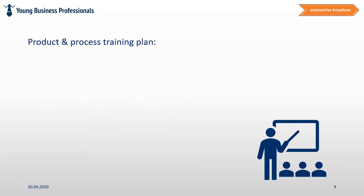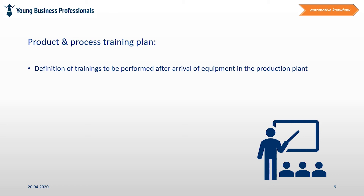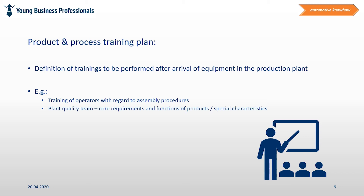Product and process training plan. Over the period of time in which all suppliers are working to produce the production equipment, you get time to define which trainings are required for the team in the production plant that shall be responsible to run the production line in the future. It is important that all employees who will be responsible in future are being trained as detailed as possible. In order to make sure that no essential part of the training is missing, it makes sense to create a training plan covering who needs to be trained, when, and by whom. Important trainings might include training of operators with regard to assembly procedures, and the plant quality team needs to be trained with regard to core requirements and functions of products and special characteristics, as well as the production manager.